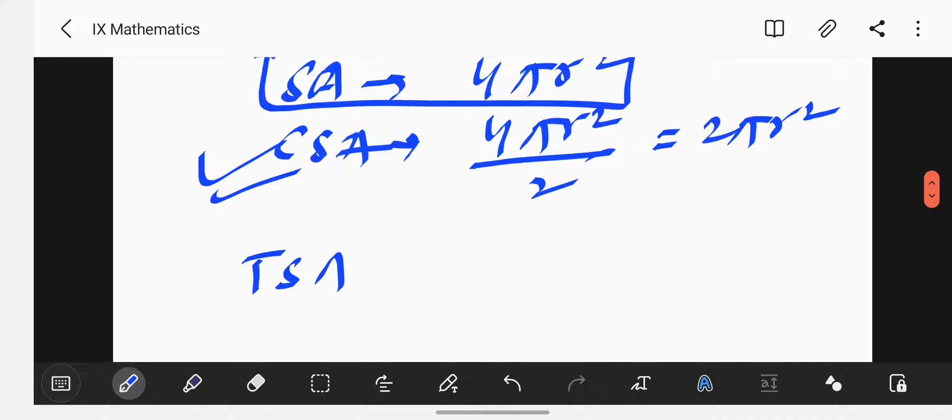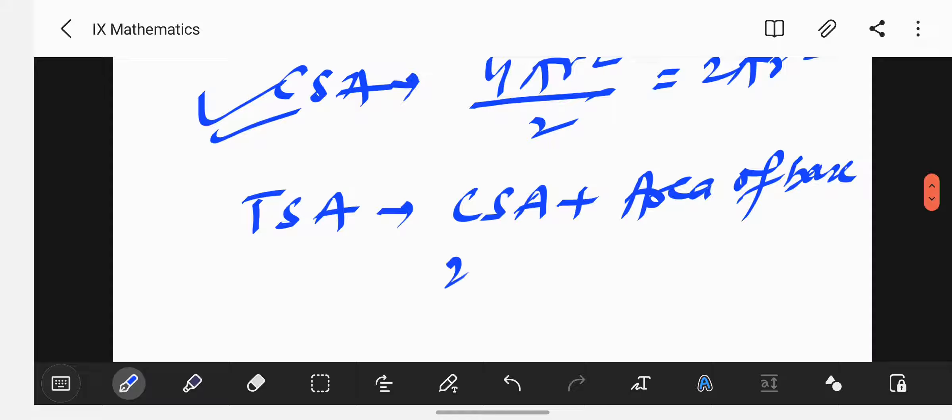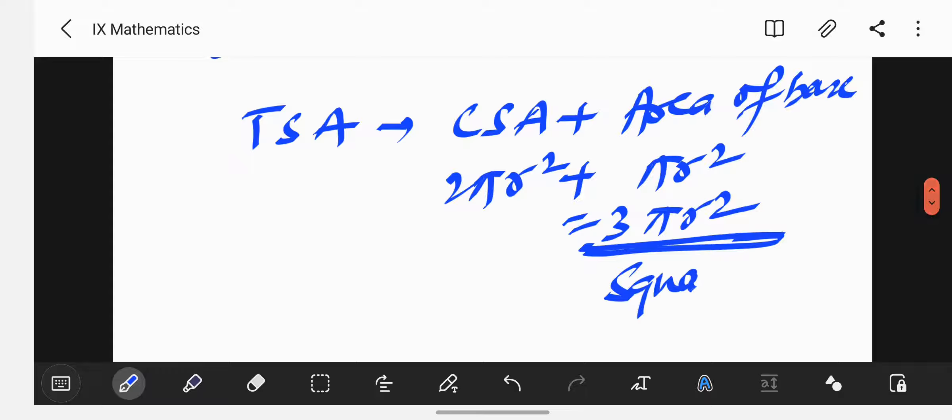For total surface area, we have the curved surface area plus area of the base. Area of base. That is in circular shape only. So, it will be 2πr² plus πr² will be 3πr². The units measurement will be square units. Like centimeter square or meter square depending upon the question.